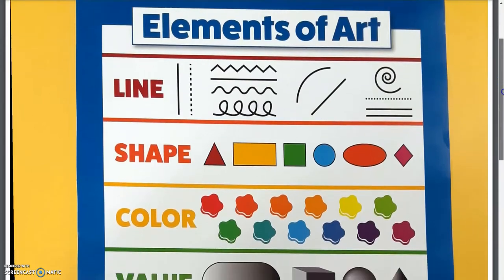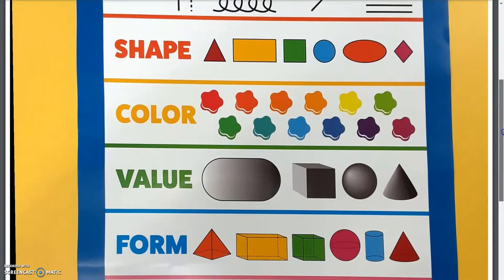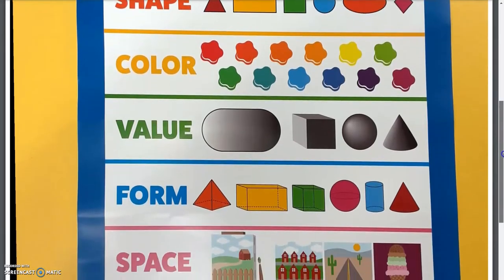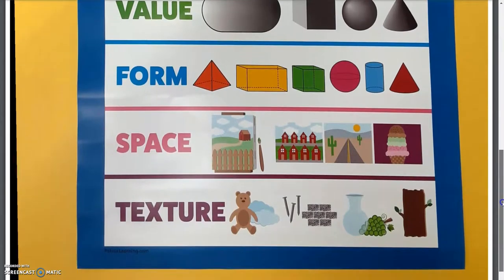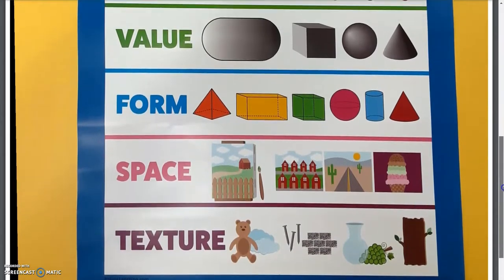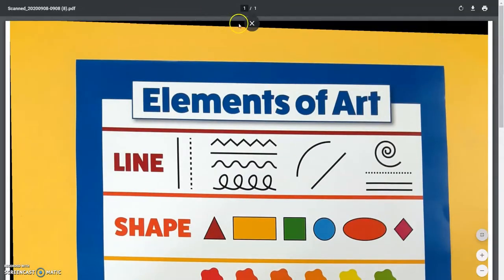We have line, shape, color, value, form, space, and texture. These are the elements that all art is made up from.